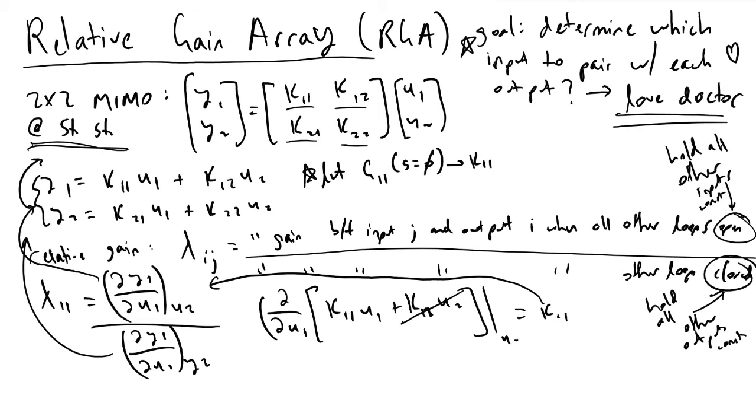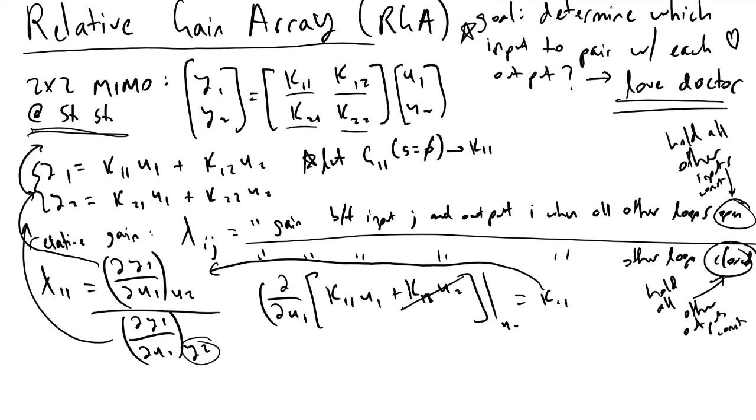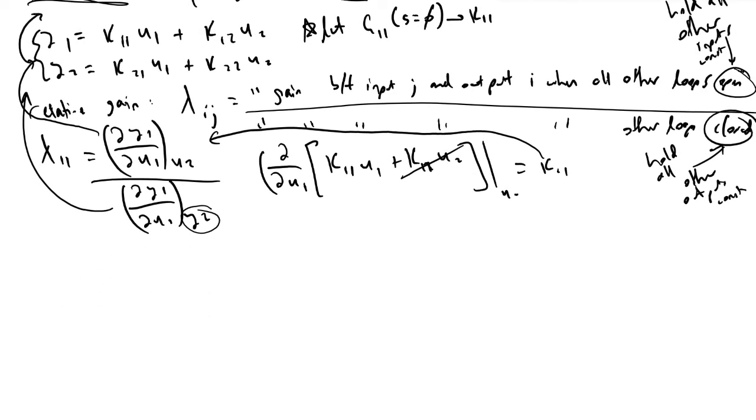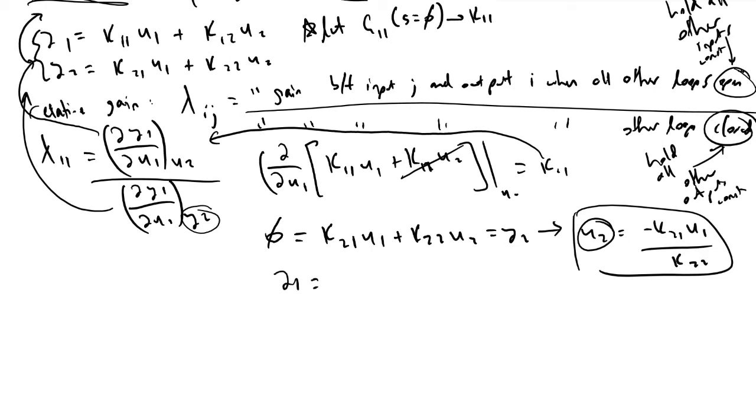However, when we want to determine the denominator of lambda, it does get a little bit trickier. Because y2 is now a constant and these are deviation variables, that means that zero will be equivalent to k21 u1 plus k22 times u2. When we solve for that, we find that if we solve for u2, we get minus k21 u1 over k22. We plug u2 into our top equation for y1, which was k11 u1 plus k12 times u2.